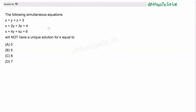Hello everyone, this question is from linear algebra and we have to find out the value of k in the given equation for which we don't have a unique solution. We have to find the value of k for which we don't have any unique solution — so we will have infinite solutions.